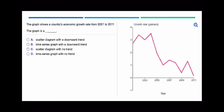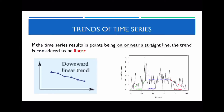Let's look at one example to test your understanding. The question reads: the graph shows a country's economic growth from 2001 to 2011. The graph is a what? Firstly, is this a scatter plot or a time series graph? Because each individual point is connected, we can eliminate options A and C — so it is a time series graph. Now, is there a trend present? In this case, notice that there is an overall downward trend, so the best answer is going to be B.